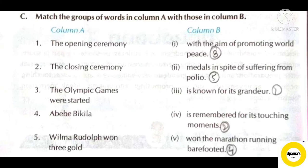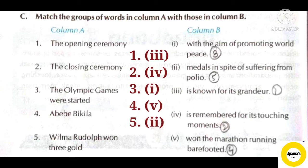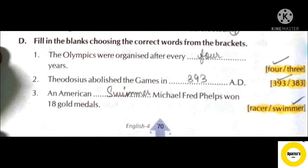Next, question C: Match the groups of words in Column A with those in Column B. Number 1: The opening ceremony is known for its grandeur. Number 2: The closing ceremony is remembered for its touching moments. Number 3: The Olympic Games were started with the aim of promoting world peace. Number 4: Abibe Bikila won the marathon running barefooted. Number 5: Wilma Rudolph won three gold medals in spite of suffering from polio.